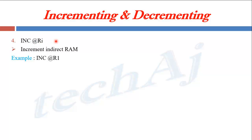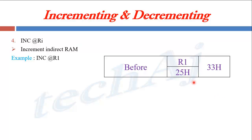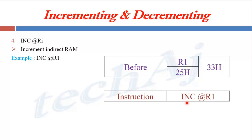The next instruction is INC @Ri, where @Ri is an indirect memory address of RAM. When this instruction is executed, whatever value is present at the address pointed to by the indirect register pointer will get incremented. For example, suppose register R1 holds the address 25H, and at address 25H we have the value 33H. When we execute INC @R1, the value at the address pointed to by R1 gets incremented, so 33H becomes 34H.